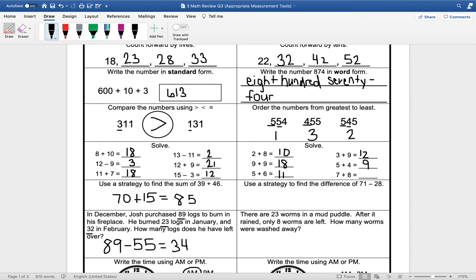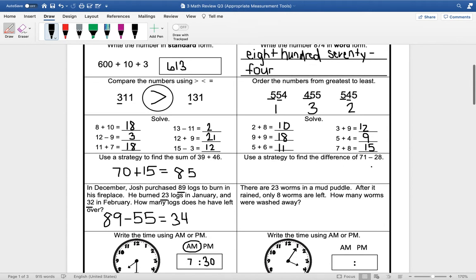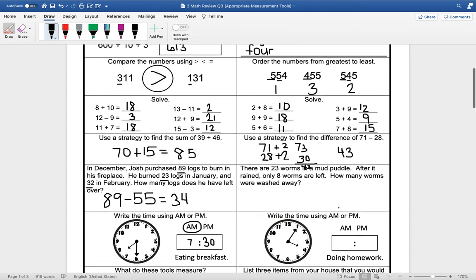All right, use a strategy to find the difference of 71 and 28. So this one we would have to regroup, so we're going to add a number so that we do not have to regroup. We're going to add a 2 to make this 30. Remember we have to add it at the top also, so 71 plus 2 is 73, and 28 plus 2 is 30. So we would subtract and get 43. The difference between 71 and 28 is 43.